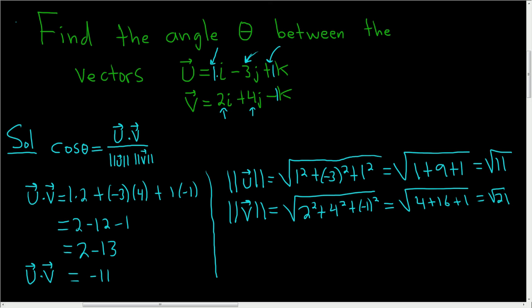It looks like we're ready to go back to our formula. So u dot v, that was negative 11. The magnitude of u, that's the square root of 11. The magnitude of v, that's the square root of 21. This is equal to negative 11 over the square root of 231. 11 times 21 is 231.